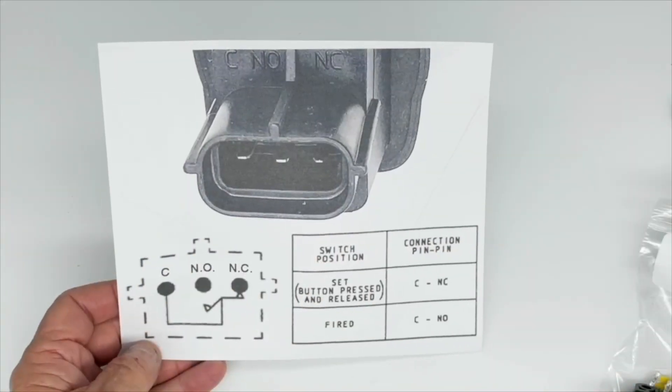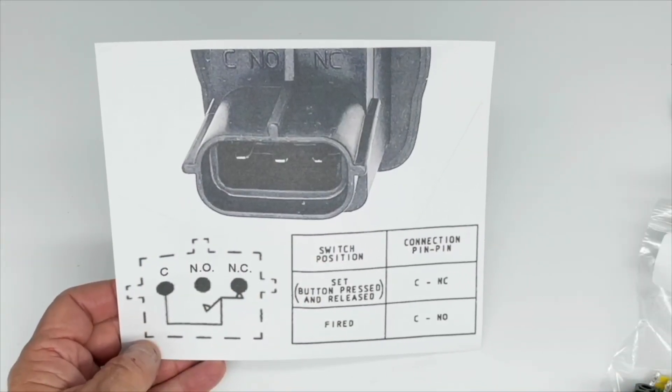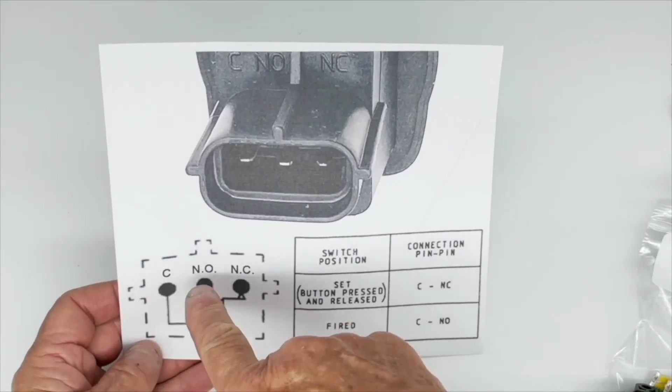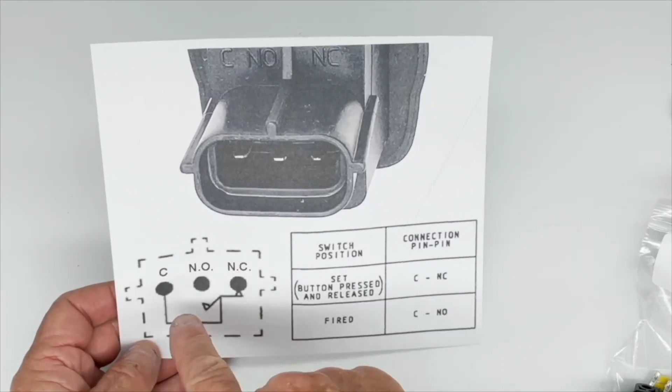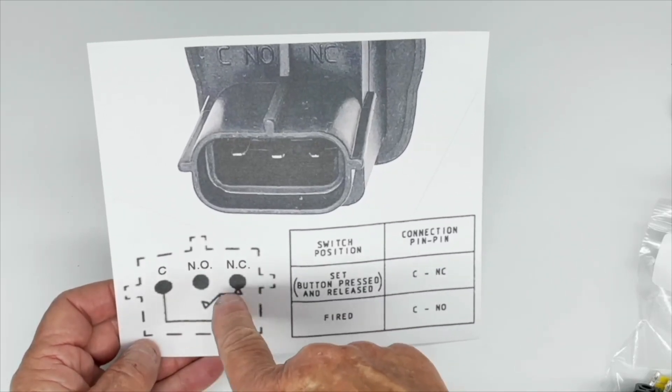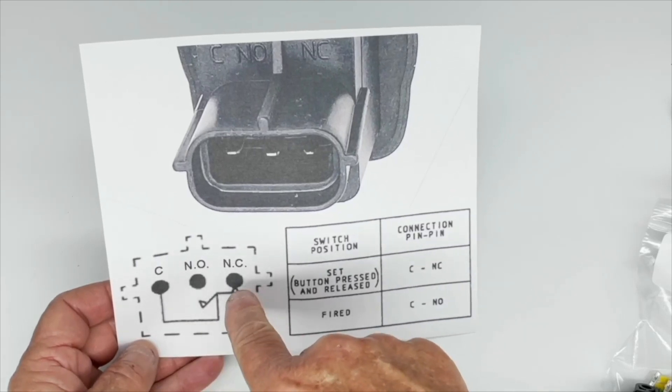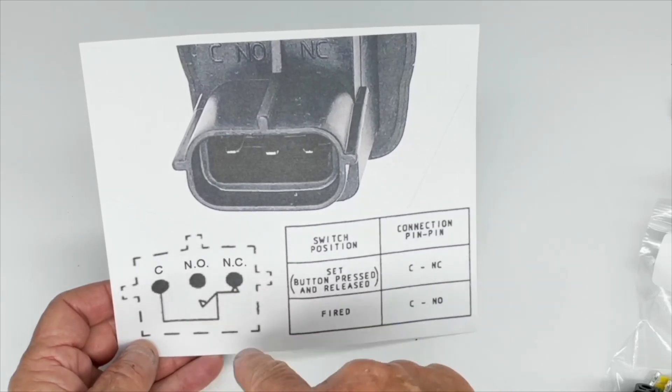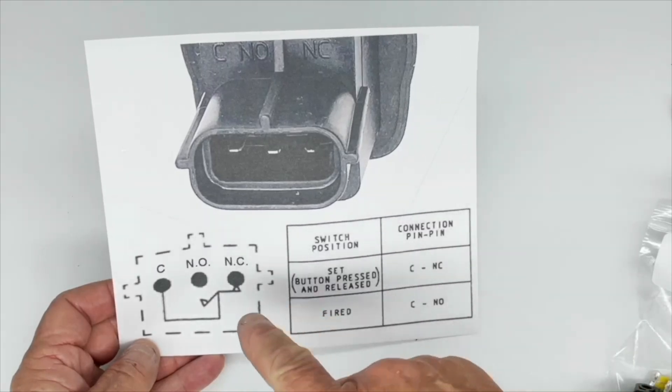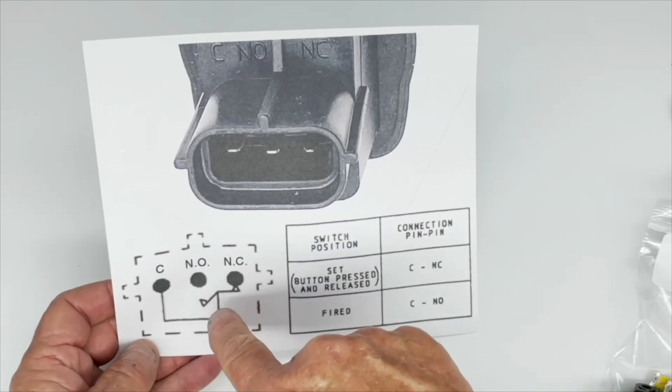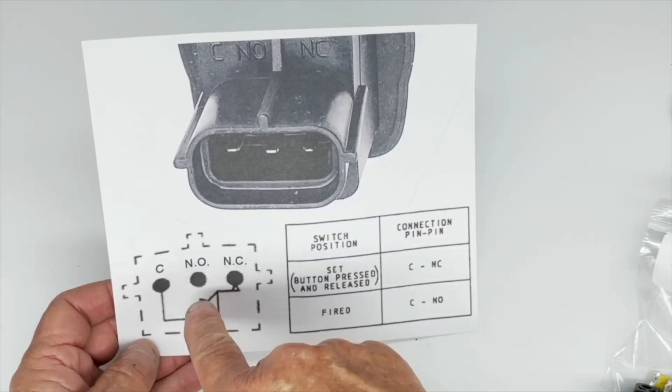You can find this diagram online which clearly shows you the three terminals. This represents the rocker switch inside the switch which is in the normally closed position. If you have an impact or a crash, this rocker flips over to the normally open position.